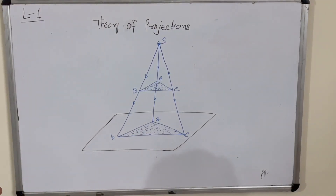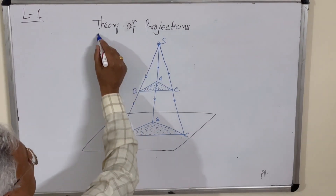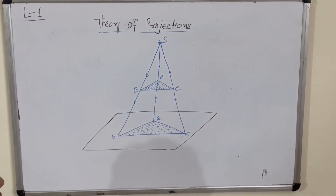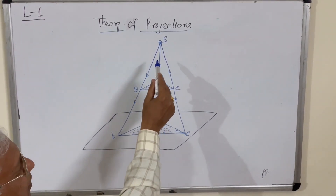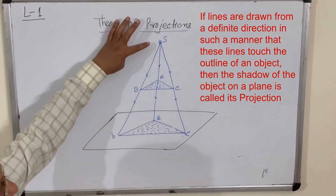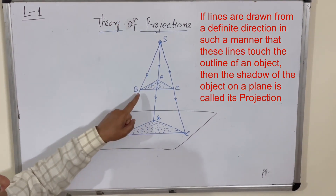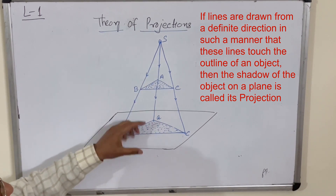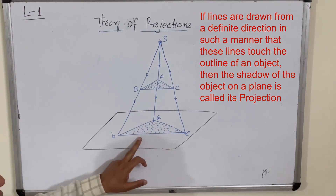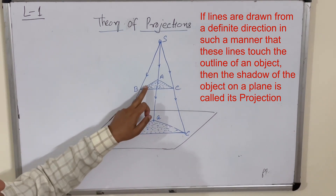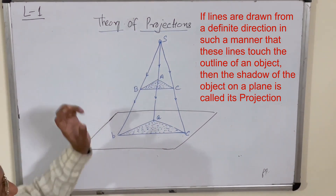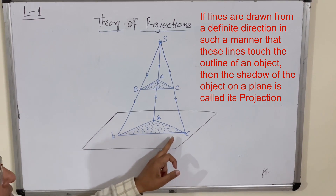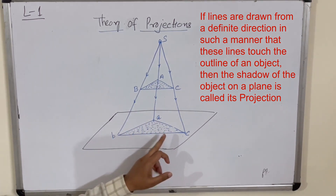Hello friends, today we will discuss the theory of projections. Let me first define what a projection is. If lines are drawn from a definite direction such that they touch the outline of an object, then the shadow of this object on a plane is called the projection. So this is object ABC, a source of light here, and a plane here. You get an image or shadow of this object — small ABC — this is the projection.